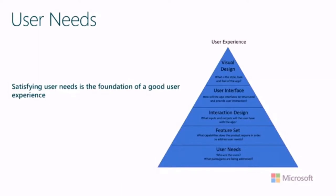Before we can build something to show users, we need to figure out what they need and what we can build for them. As we're designing and building software, you want to create a user experience that draws people to your app. The foundation of that, as represented in this pyramid, is something that satisfies the needs of your users. That's why we're going to start with user needs in this module — figuring out who our users are and how we can address the things that would benefit them.